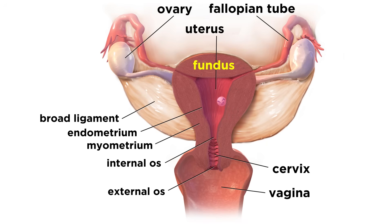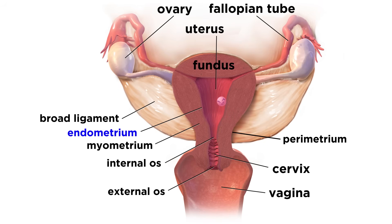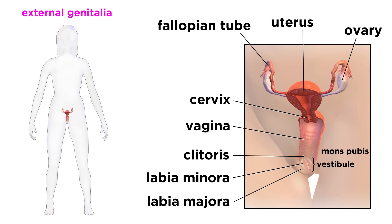The uterus has a rounded top region called the fundus and a narrow neck at the bottom called the cervix, with its cervical canal. The wall of the uterus is quite thick, comprised of three layers: first the parametrium, then the bulky myometrium made of smooth muscle, and then the endometrium, which lines the uterine cavity or lumen. Going through the cervical canal, we reach the vagina, the copulatory organ for the female, which receives the penis during intercourse. Further out, we arrive at the external genitalia, collectively known as the vulva, which consists of the mons pubis, skin folds called labia majora and labia minora, the clitoris, and the vestibule.